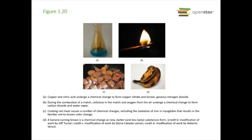If you take copper and add it to nitric acid, you form copper nitrate and brown gaseous nitrogen dioxide — those are chemical changes. Lighting a match is a combustion reaction where cellulose in the match and oxygen react to make carbon dioxide and water vapor. Cooking meat causes red meat to turn brown as it oxidizes the iron in it. Bananas turning brown is also a chemical change.